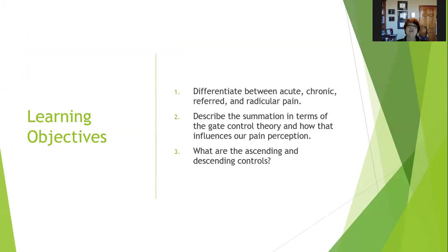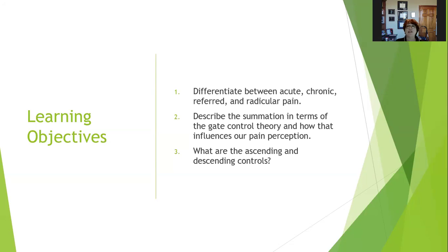The learning objectives are pretty slim, meaning there's a lot of information in this chapter, but we're going to focus on these things when it comes to assessment. I want you to get a flavor for what's going on with pain theory so that next quarter, when we talk about it again in neuro, it's going to make much more sense. We're going to differentiate between acute pain, chronic pain, referred pain, and radicular pain. We're going to describe summation in terms of the gate control theory and how that influences our pain perception, and the difference between ascending and descending pain controls. Not everything is known about pain theory.